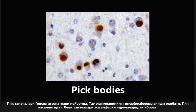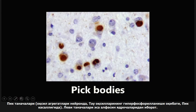This next one is an example of Pick bodies — protein aggregates seen in neurons caused by hyperphosphorylation of tau protein. You might confuse these with Lewy bodies, which can sometimes look similar. But the distinction is important: Lewy bodies are composed of alpha-synuclein, while Pick bodies are composed of hyperphosphorylated tau protein. Pick bodies are obviously seen in Pick disease.